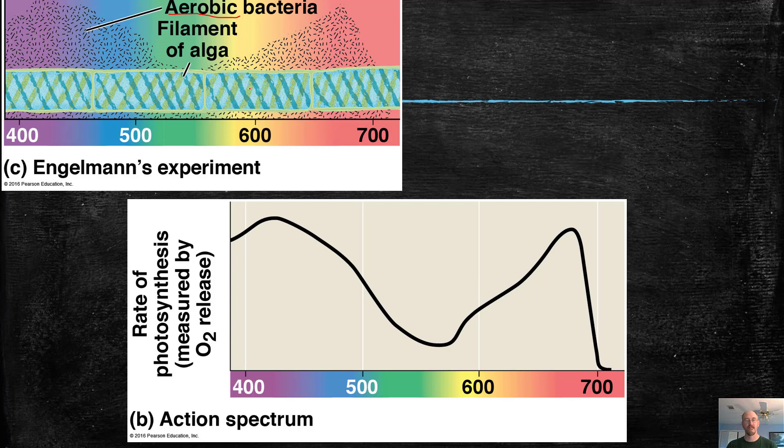He also put a filament of algae, this is spirogyra, a type of algae that photosynthesizes. And then he put a prism, and he put light on that prism so that you get the rainbow here, right? The different colors, the spectrum. And then he watched to see what would happen.